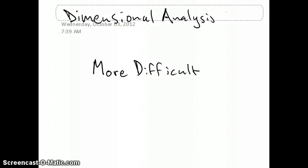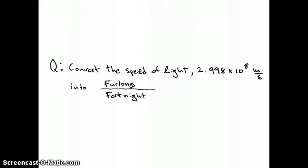Now we'll do a more challenging dimensional analysis problem. In this presentation we're going to convert the speed of light, 2.998 times 10 to the 8th meters per second, into the units furlongs per fortnight.